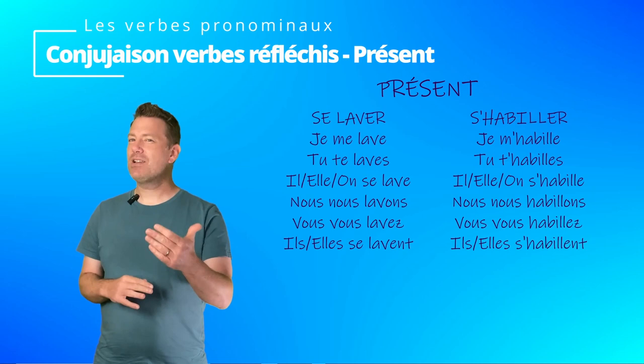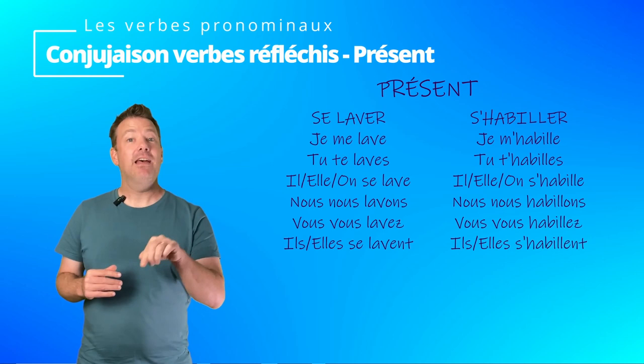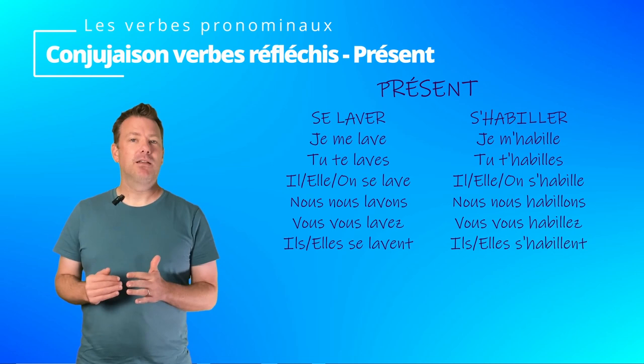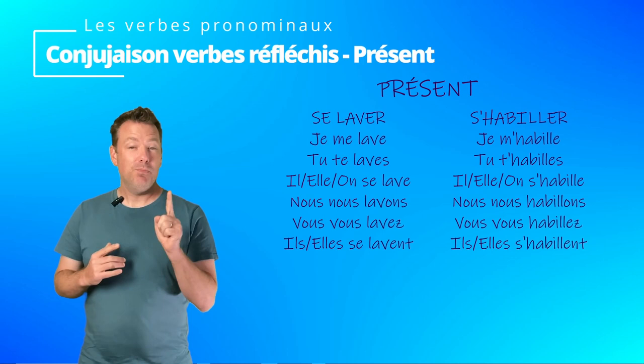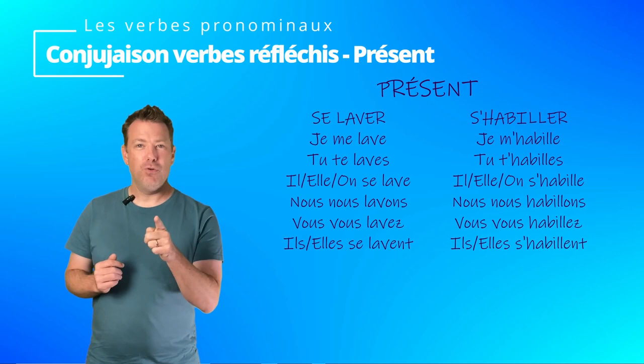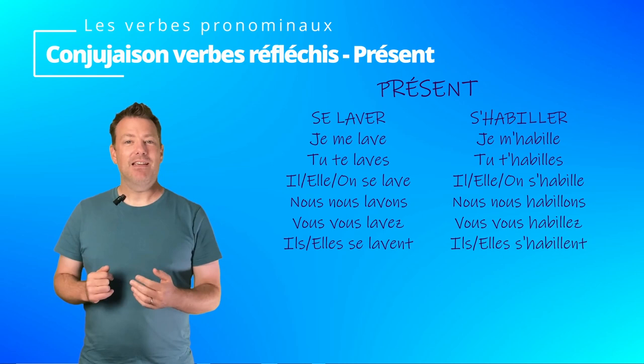Let's cover s'habiller. Je m'habille — you see, m'apostrophe, it starts with a vowel. Tu t'habilles. Il s'habille. Elle s'habille. On s'habille. Nous nous habillons — be careful with the liaison here. Vous vous habillez. Il s'habille. Elle s'habille.